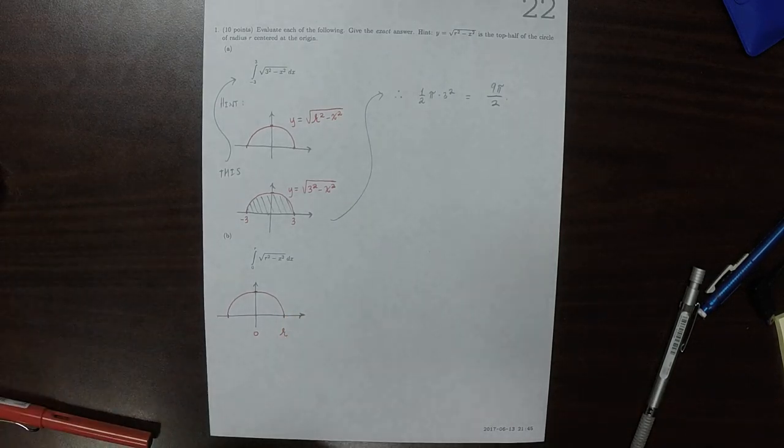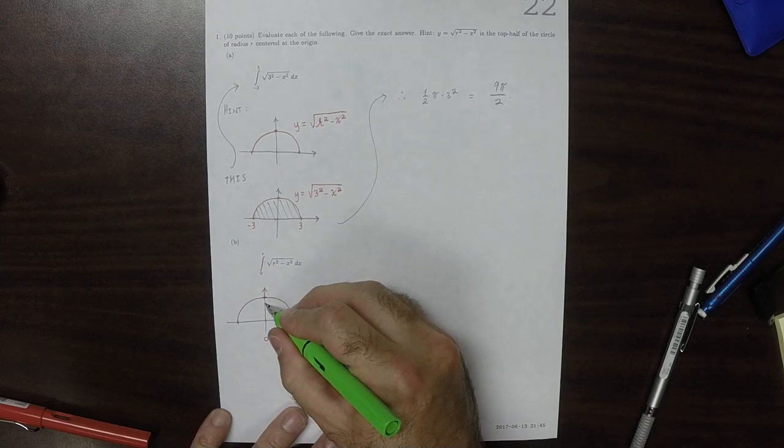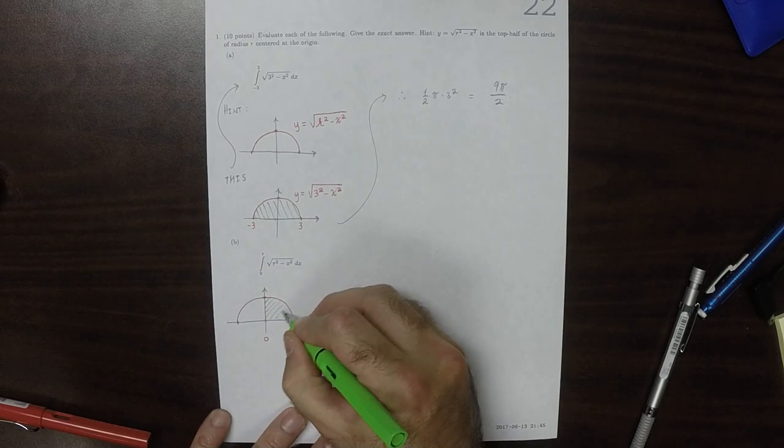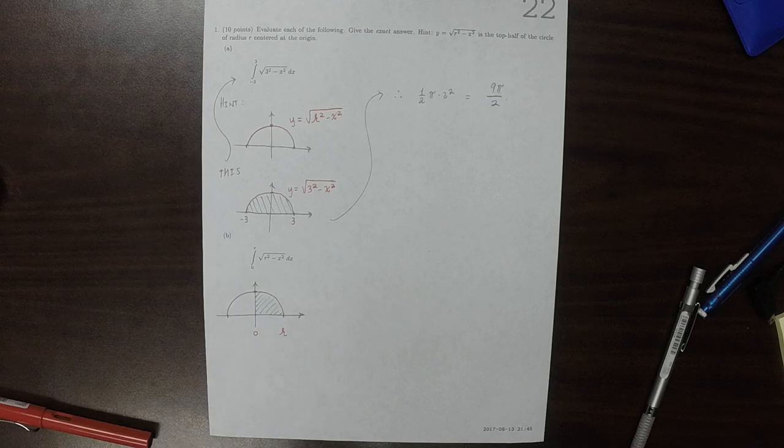So now, the area that's being requested is actually this area, which is a quarter circle.